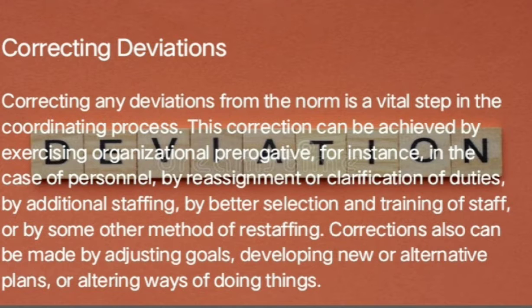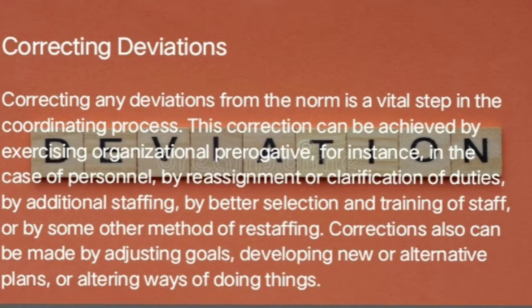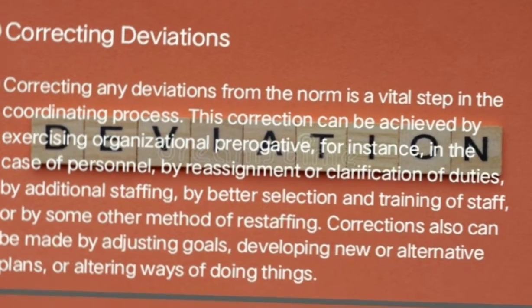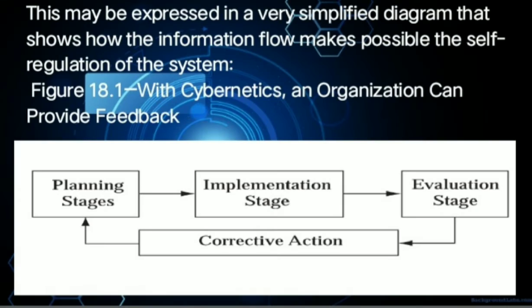Corrections also can be made by adjusting goals, developing new or alternative plans, or altering ways of doing things. Correcting deviations may also be expressed in a very simplified diagram that shows how the information flow makes possible the self-regulation of the system.